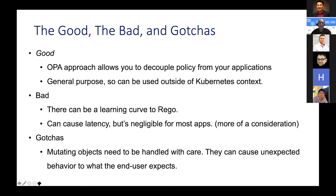The good: OPA allows you to decouple your policy from your applications. In that pipeline example, regardless of whether someone comes through a pipeline, a command line tool, or a back door, everything gets intercepted in that admission control pipeline. So I can deny things regardless of the channel coming through.